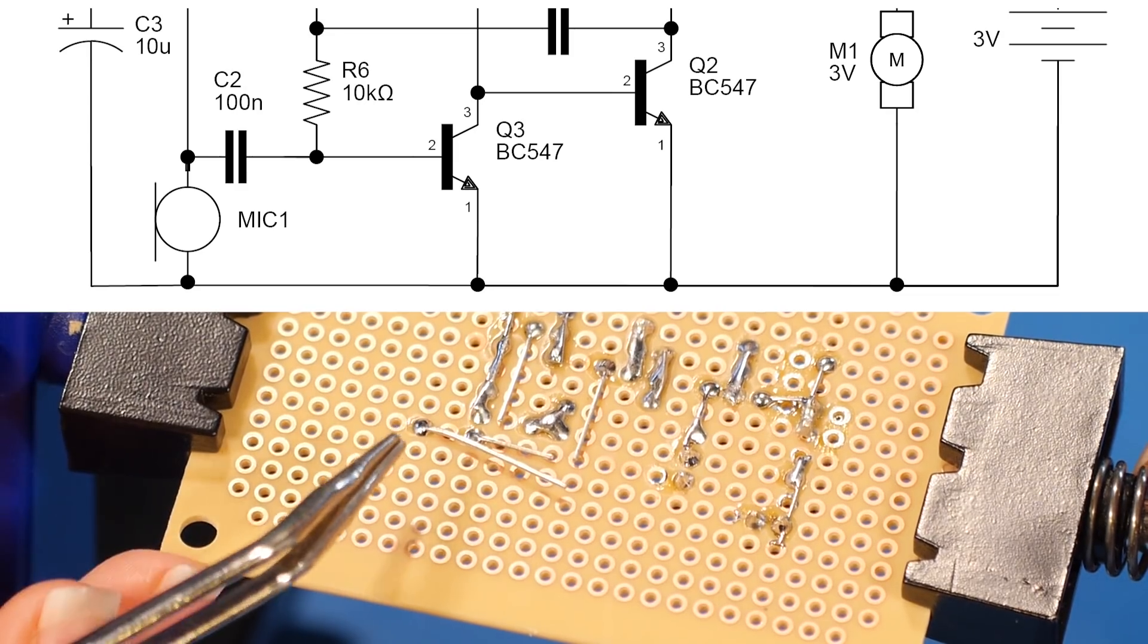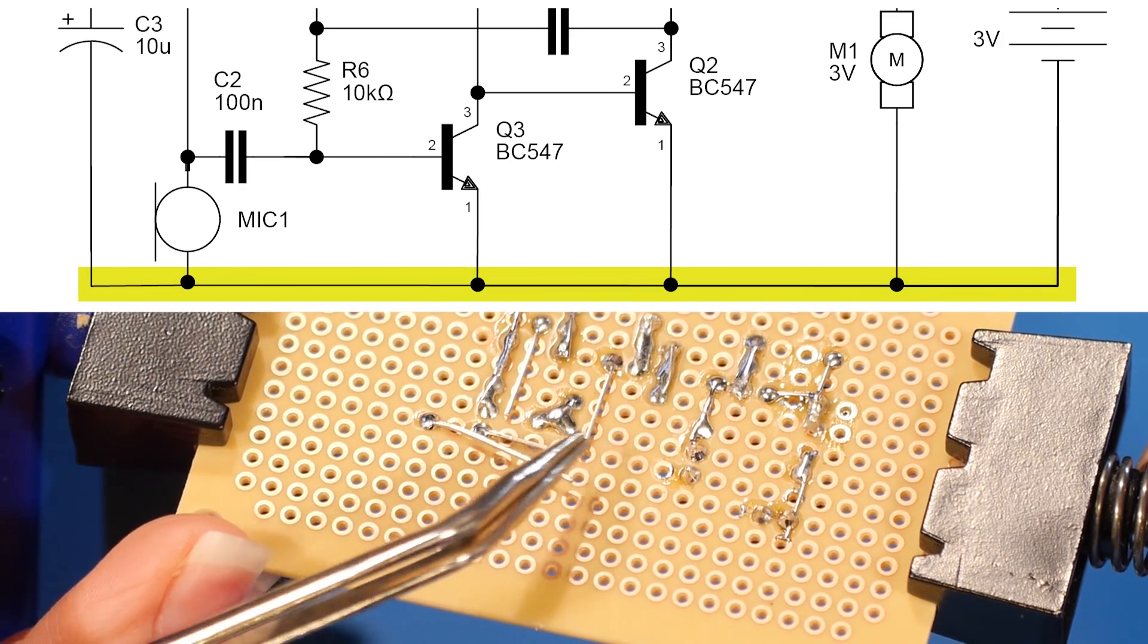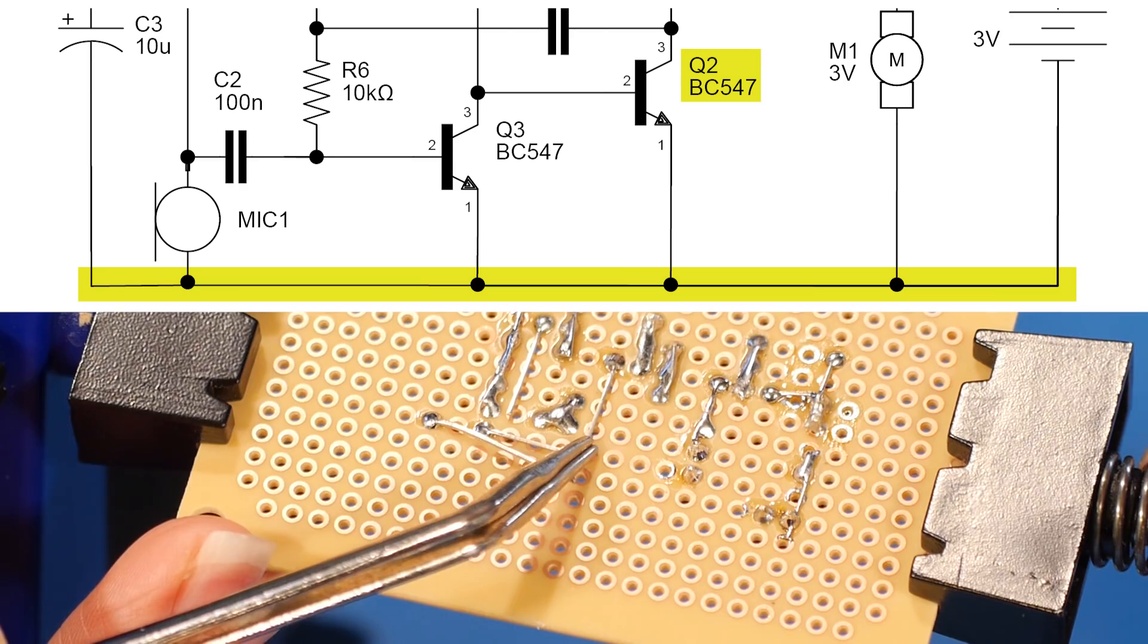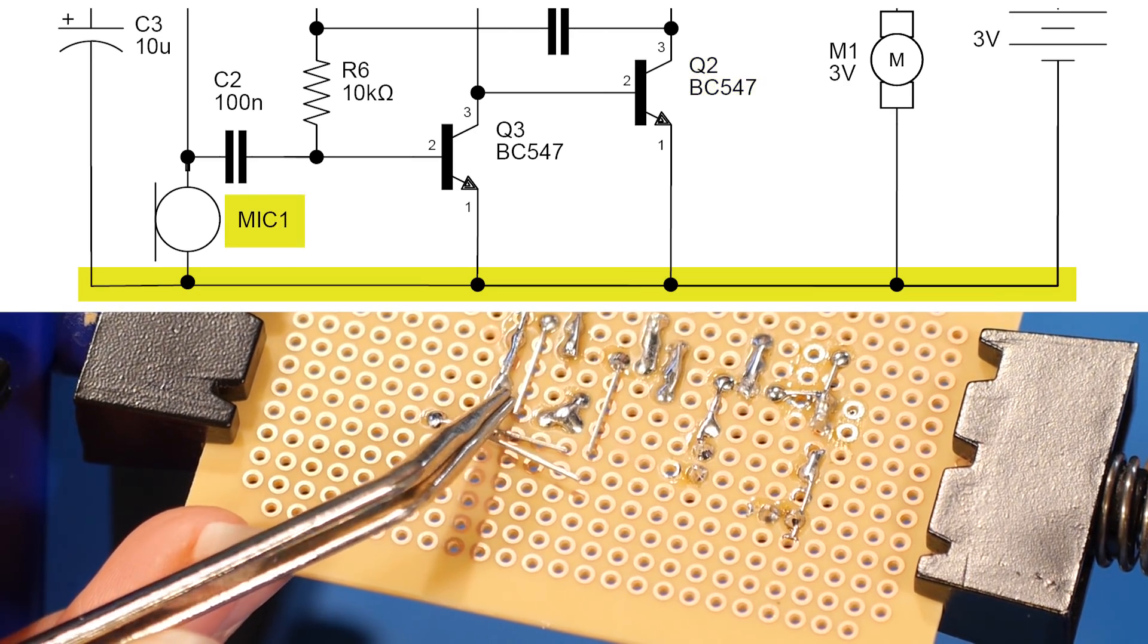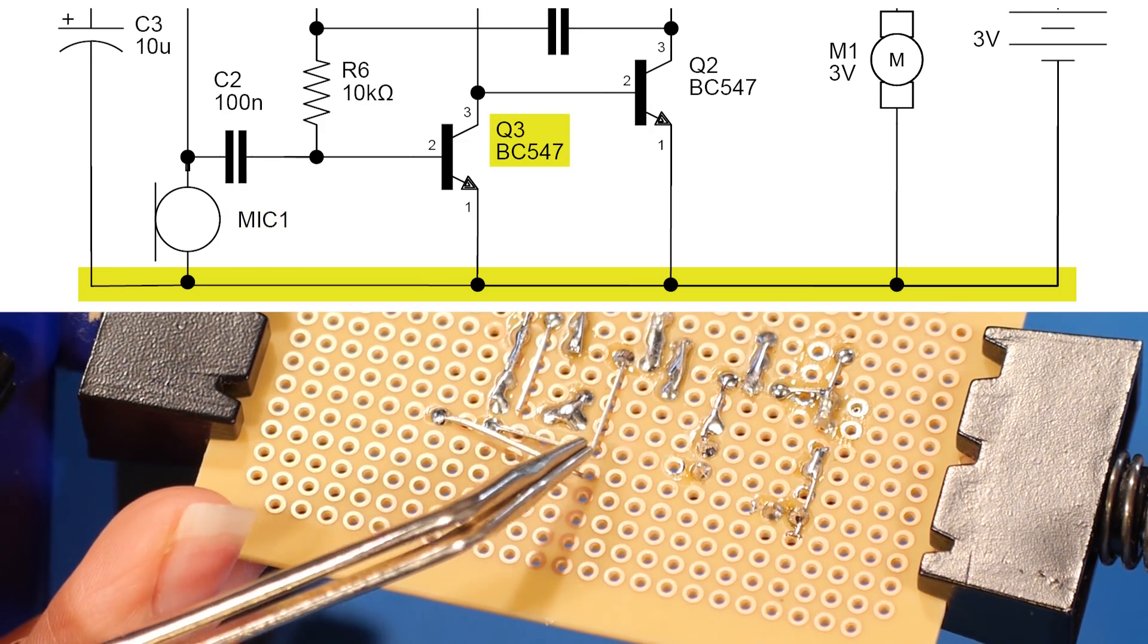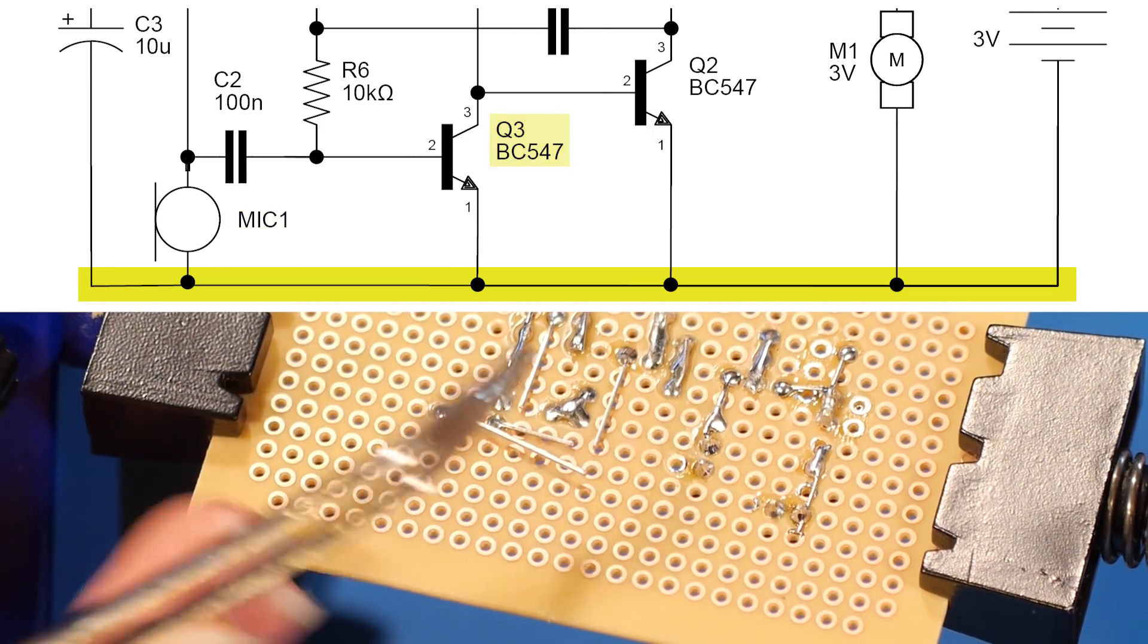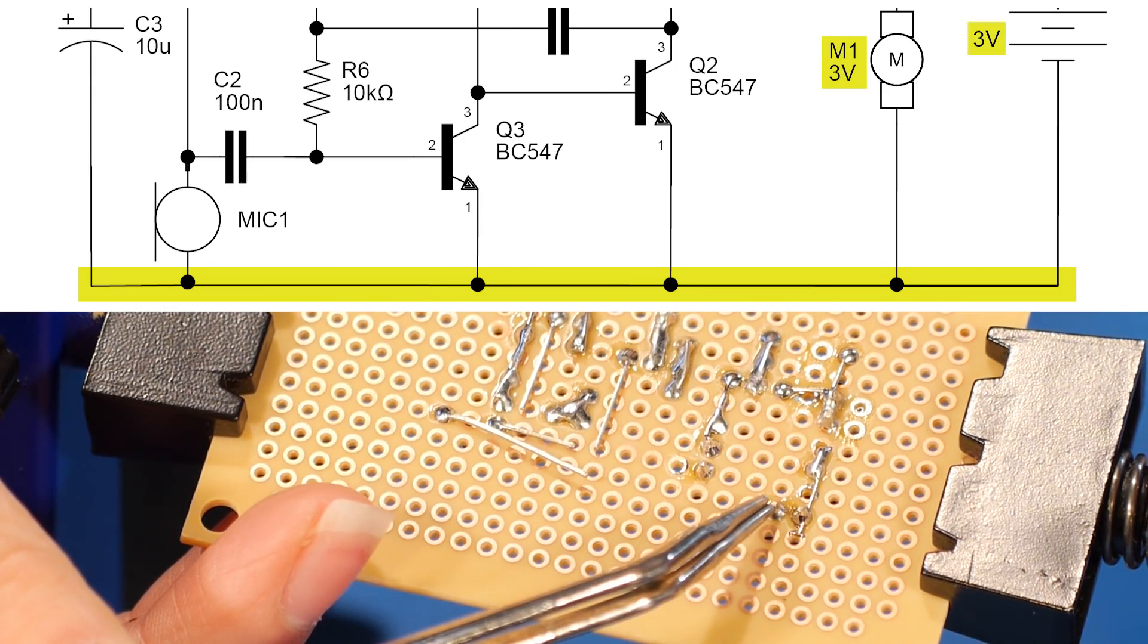Okay, now it's time to solder our ground plane together. So we will take the pin from the capacitor here to reach over to the emitter of Q2. We can bend up the pin of our microphone up to the emitter of Q3. And then we'll add a lead to connect this part of the ground plane over here to the motor pin and then over to the power pin.